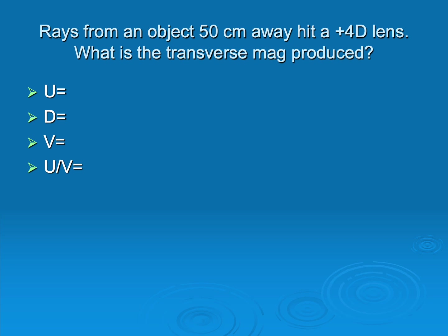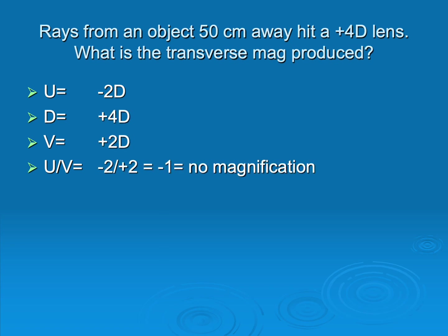Here we have an object 50 centimeters away from a plus 4 lens. That's minus 2, since 100 divided by 50 equals 2. We calculate U over V equals 1. It doesn't matter plus or minus 1 — when we have exactly 1, there is no magnification, zero mag. The object and the image are identical in size.